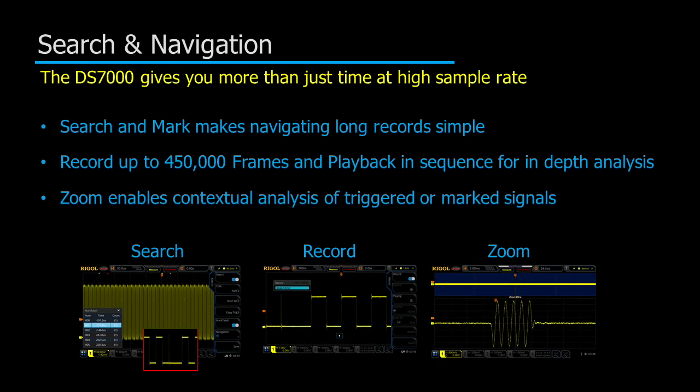The 7000 series oscilloscope provides advanced search and navigation capabilities that make it possible to utilize the full power of the deep memory in a number of ways, depending on what kind of signal artifacts you're searching for.